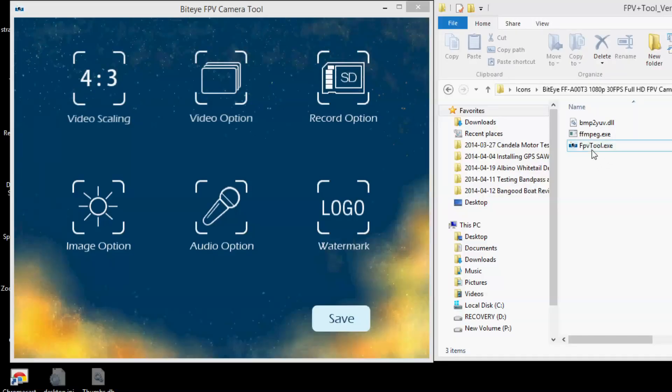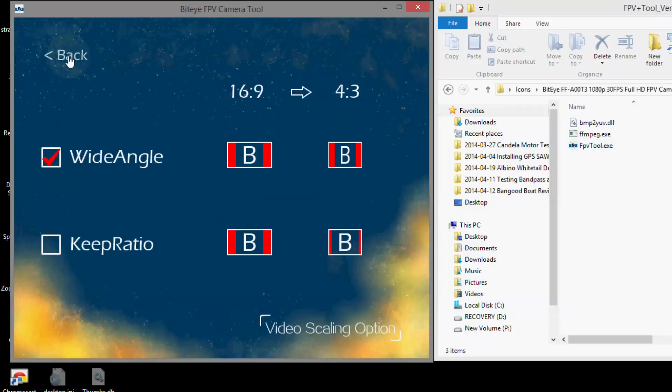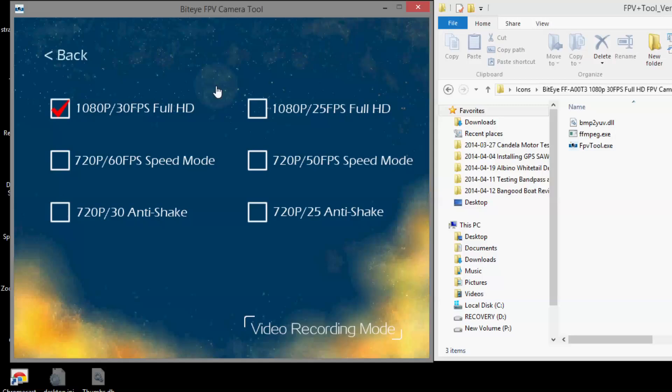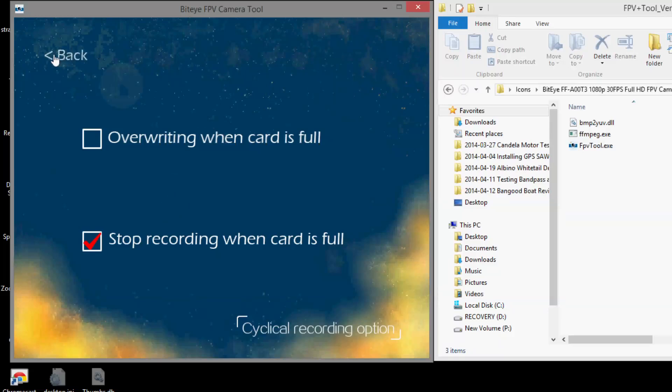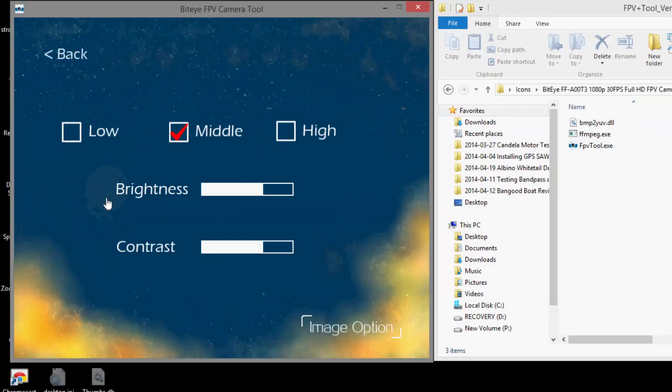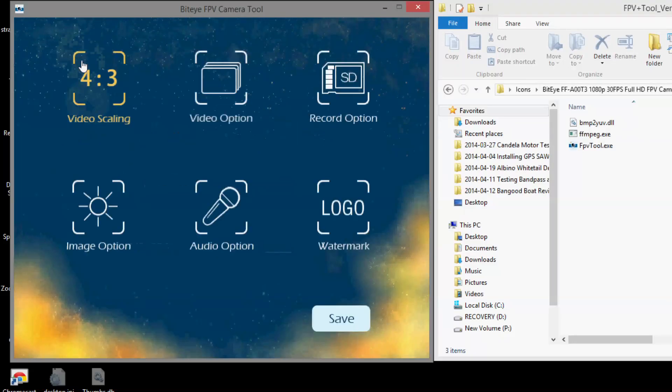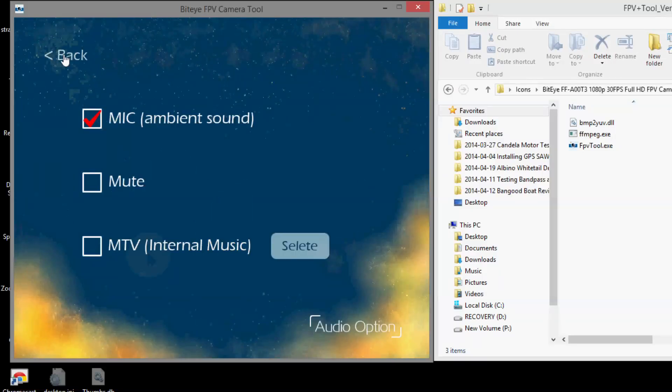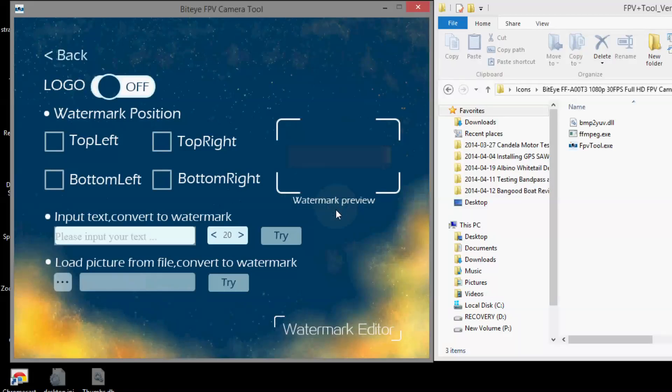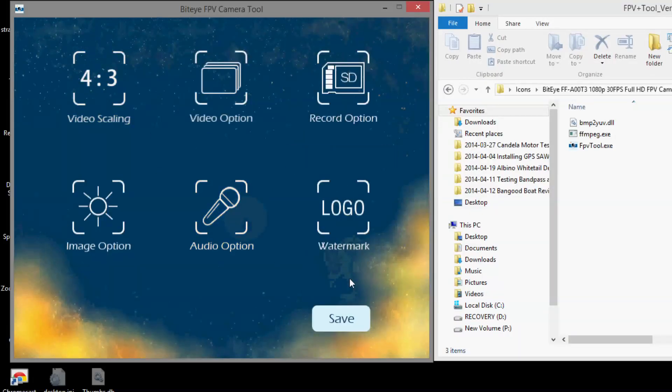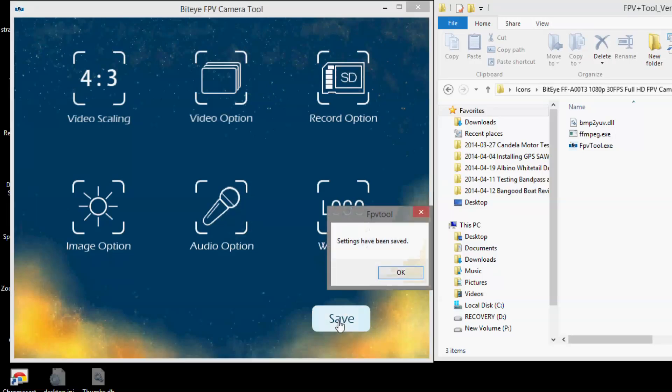The BitEye has a configuration tool that you can use to create a configuration file. You can change the video scaling. You can also go into the video option and pick your video size and frame rate. You can do the record option like stop recording and just overwrite the card. You can change the light settings, that's like white balance. In audio you can actually turn off the mic if you want or record music on there. You can put a logo onto the camera or text and then you can save the file to a configuration file.